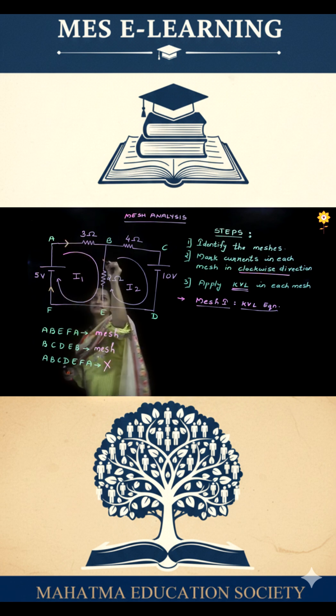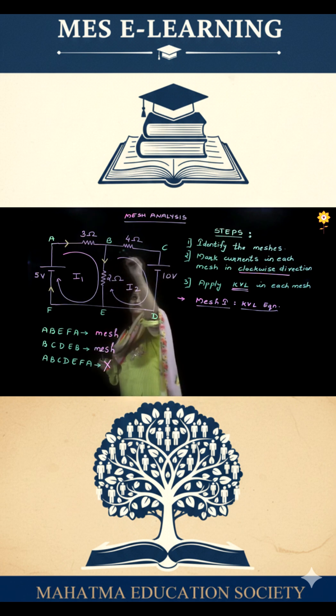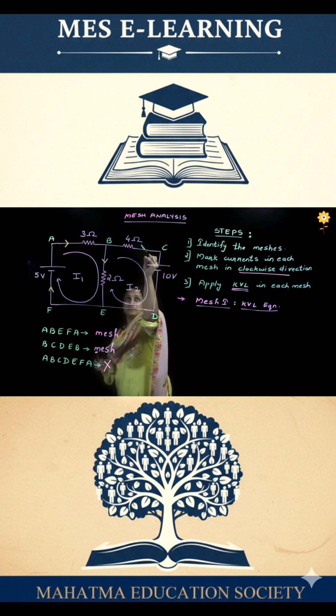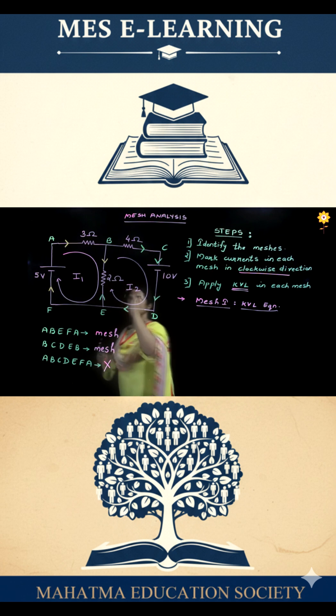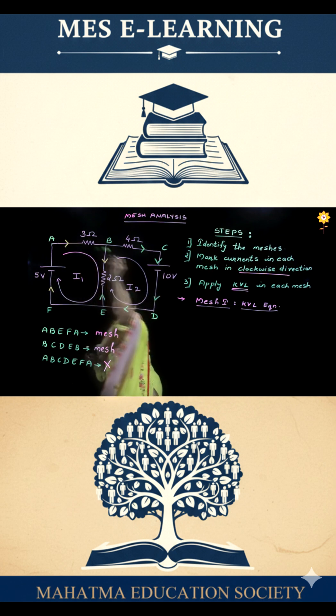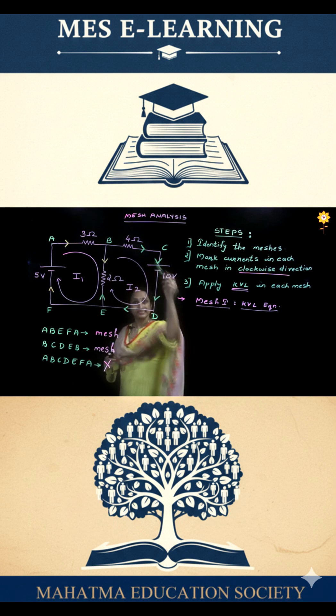We are going to trace the path in this direction. Similarly, while writing the KVL for the second mesh, again we are going to move in the clockwise direction. The orange mark represents the KVL path that we are going to traverse while writing the KVL equation, and the green arrows indicate the path that we are going to travel while writing the equation for the second mesh.